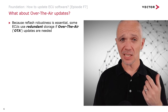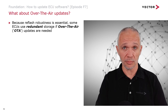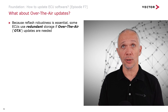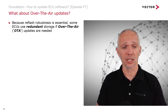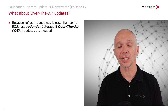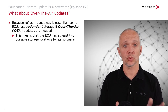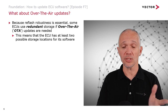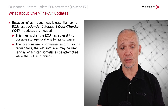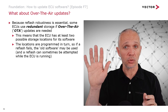If we think about over the air updates — which is a new thing in automotive, the ability to have remote updates applied to vehicles — because the robustness of the reflash process is really essential, some ECUs use redundant storage when over the air updates are needed. This means that the ECU has at least two possible storage locations for its software, possibly even three locations.